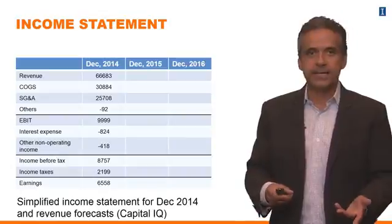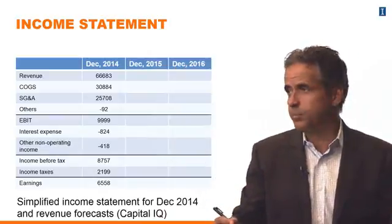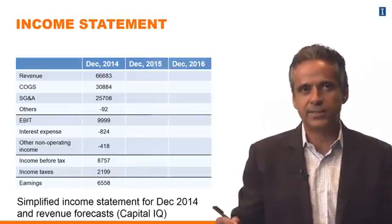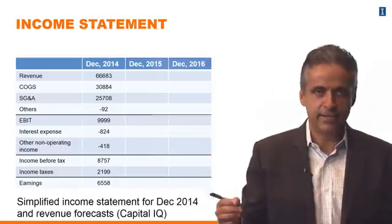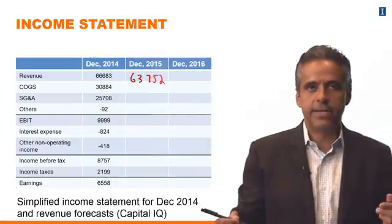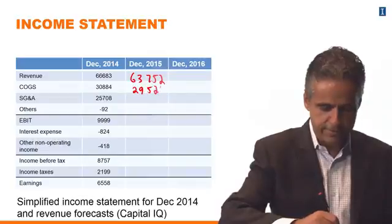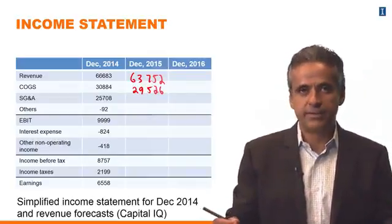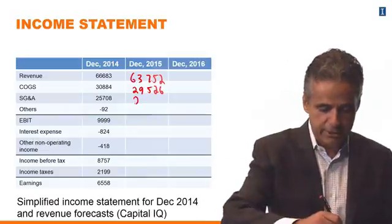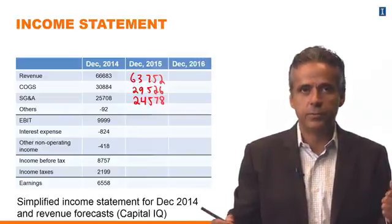So we go back to the income statement — you would do this in a spreadsheet, since it's not practical to forecast an income statement on pencil and paper. You have revenue, then you keep forecasting the other numbers. COGS is this value. SG&A — we're going to use the same assumption, growing at the same rate as revenue, keeping the same fraction. SG&A in 2015 is going to be 24.5 billion.